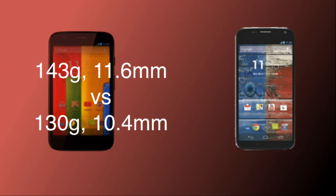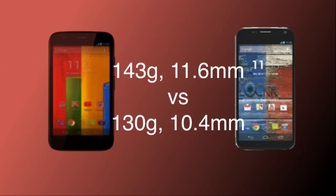Looking at the weight and dimensions of both devices, the Motorola Moto G weighs 143 grams, which is slightly higher than the Motorola Moto X at 130 grams. In terms of thickness, the Moto G is also slightly thicker at about 11.6 millimeters whereas the Moto X is 10.4 millimeters.